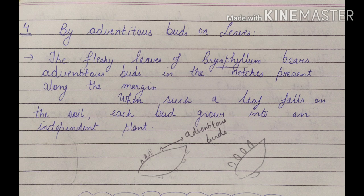Another natural method of vegetative propagation is by adventitious buds, such as in Bryophyllum. This plant bears adventitious buds along the margin of its leaves. When such a leaf falls on the soil, each bud will finally grow into an independent plant.